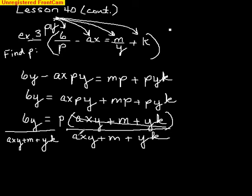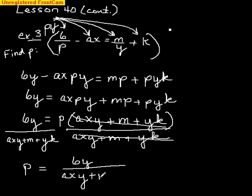This all crosses out and you get for a final answer p equals 6y over axy plus m plus yk. And these actually get more complicated as we go along in the book, but this is our introduction to them in Algebra 2.